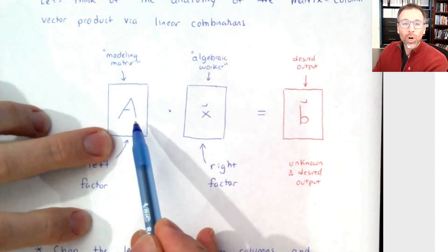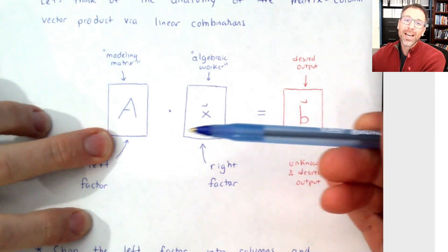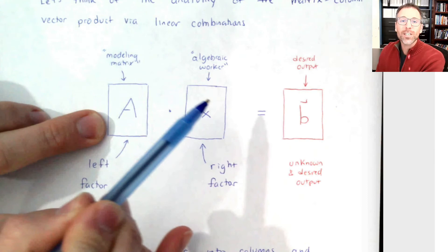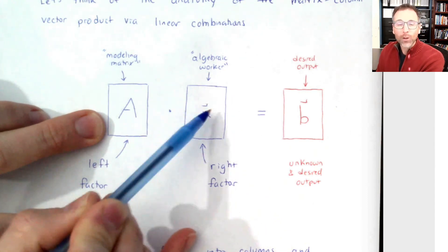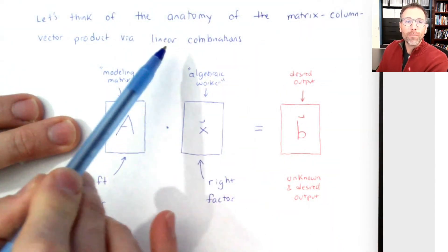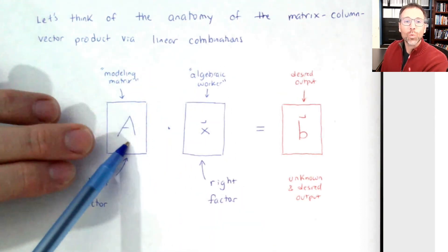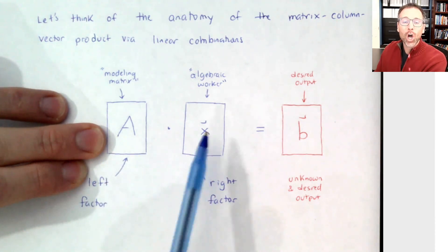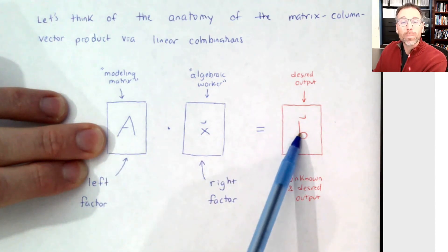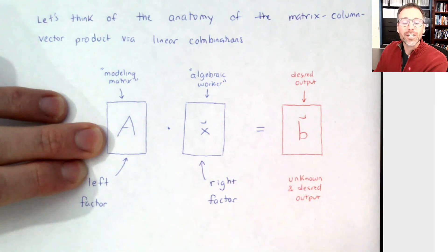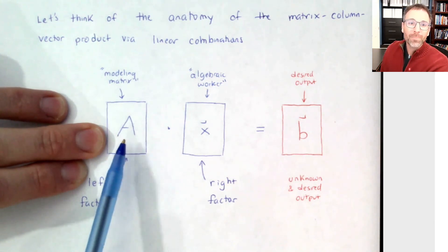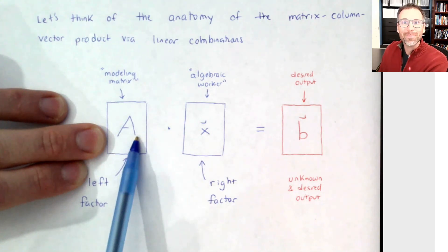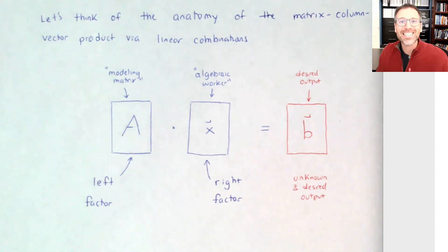But in order to get our head around the operation, I gave you these. So we call this thing the modeling matrix. In this case, we were going to do algebraic work on the modeling matrix by multiplying that matrix on the right-hand side. So the left factor was a modeling matrix. The right factor was the algebraic worker. In the matrix-column-vector product via linear combinations, we're going to chop the left one into columns and then scale each column by the individual entries of x to produce the linear combination, which is b. So when modeling shows up on the left and algebraic worker shows up on the right, we chop the left into columns. This is a theme that shows up, and that's exactly what we did.